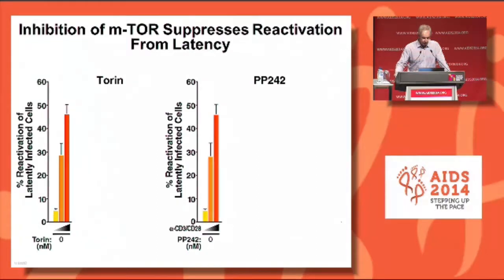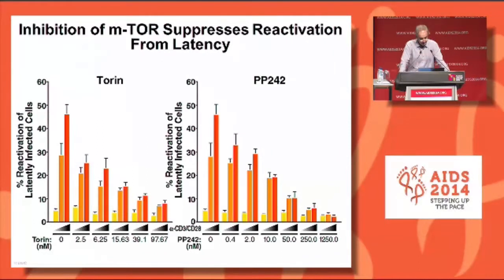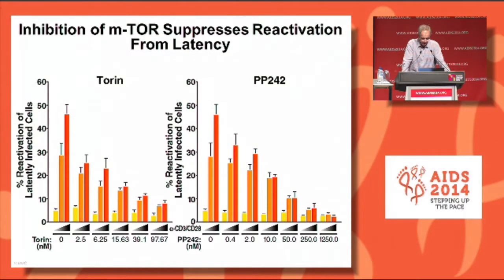Our next question was to examine the potential role of TOR in latency using these inhibitors, in a collaboration with Bob Siliciano and colleagues using a primary model of latency with an HIV reporter in primary CD4 T cells. Latent cells treated with CD3 and CD28 show progressive activation from 2-3% to 50%. However, adding torin and PP242 at concentrations that mimic those used in patients can completely suppress the reactivation.